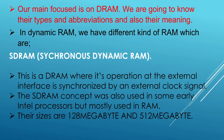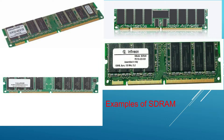In dynamic RAM we have different kinds. First is synchronous DRAM, also known as SDRAM. It is a dynamic RAM whose internal interface is synchronized by an external clock signal. The SDRAM concept was also used in some early Intel processors but was mostly later converted to RAM use. Their sizes are 128 megabytes and 512 megabytes. Here we have an SDRAM which has a 2U notch — you can see it on screen — with 128 megabytes.